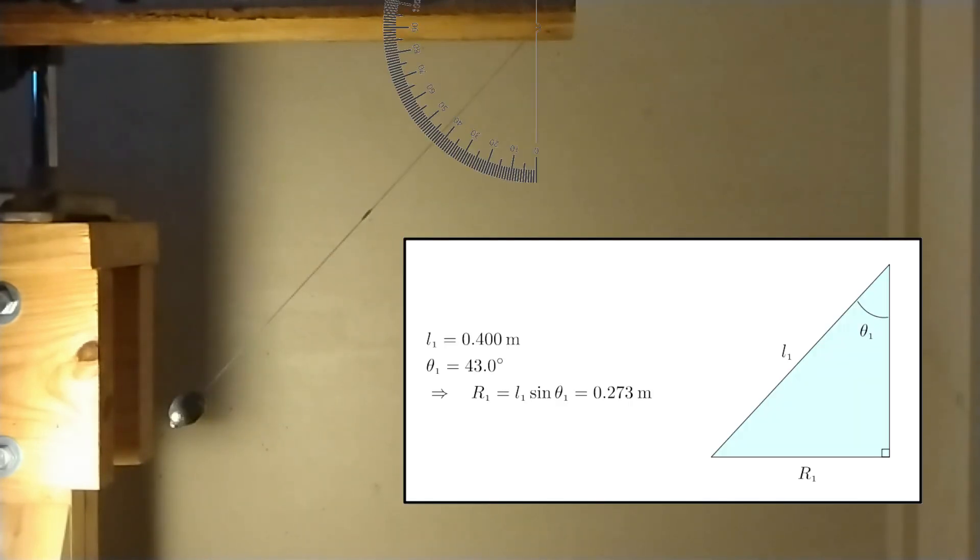We have here a string length L of 40 centimeters and the angle theta is 43 degrees. Using trigonometry, we calculate the radius r of the circular motion to be 27.3 centimeters.